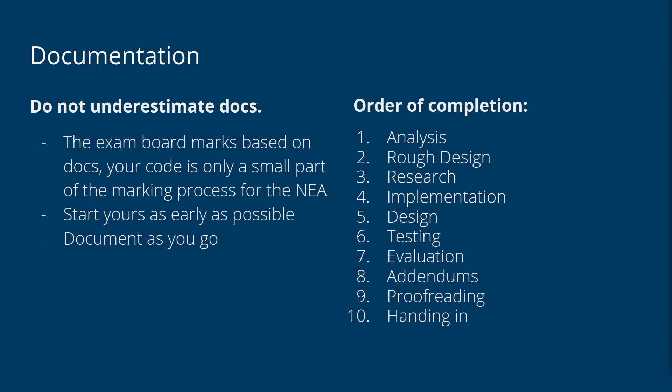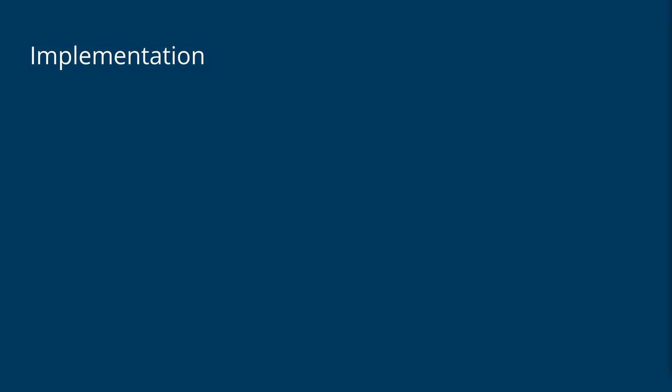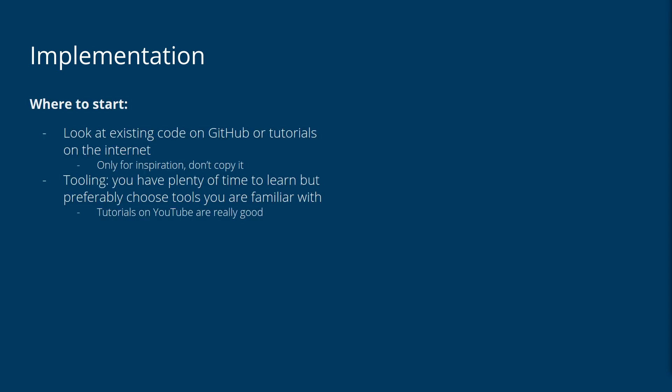Now going more deeply into implementation: if you have no idea where to start, look at existing code on GitHub or tutorials on the internet — YouTube is a good place — but only use them for inspiration. Don't copy outright. If you do use something from a tutorial or existing codebase, maybe use an individual function from it and then reference it in your documentation. If you're already comfortable with the tools you plan to use, great. But if the best fit-for-purpose tools are unfamiliar, go and learn them — you still have loads of time. I used a tutorial series for the Flask framework on YouTube because I hadn't used it before.